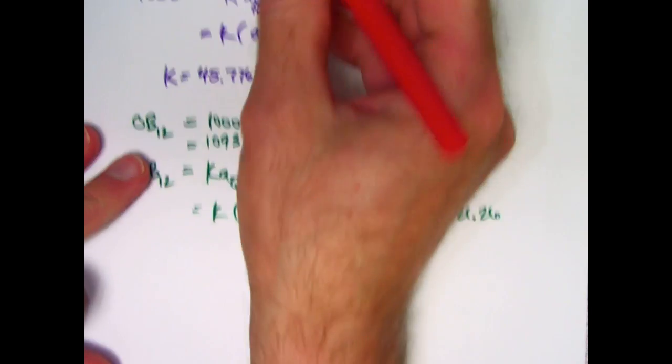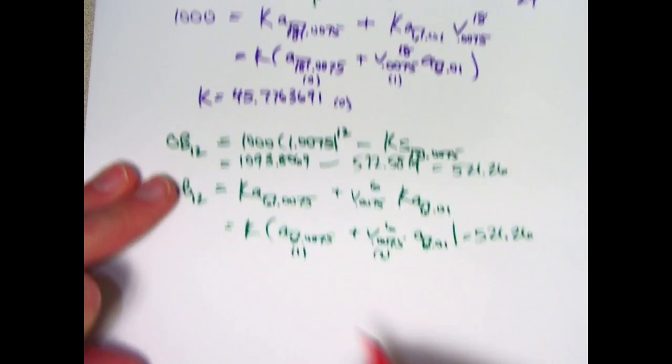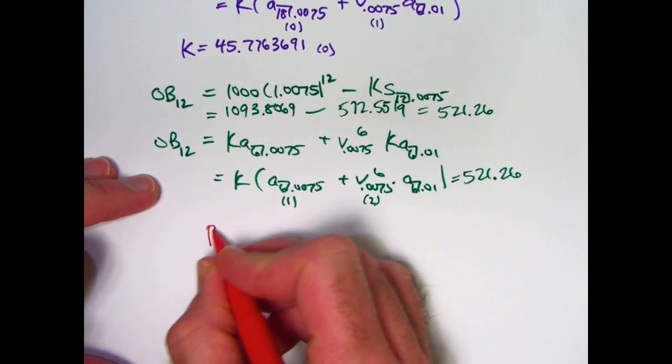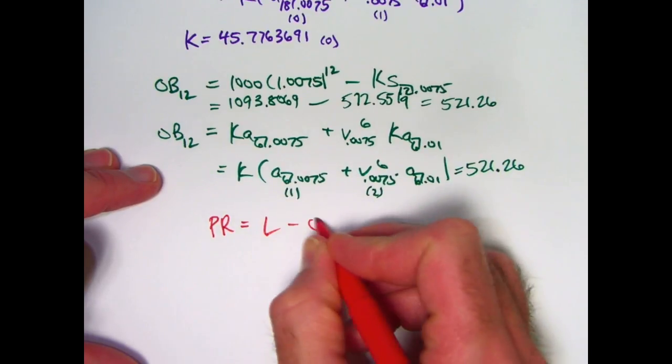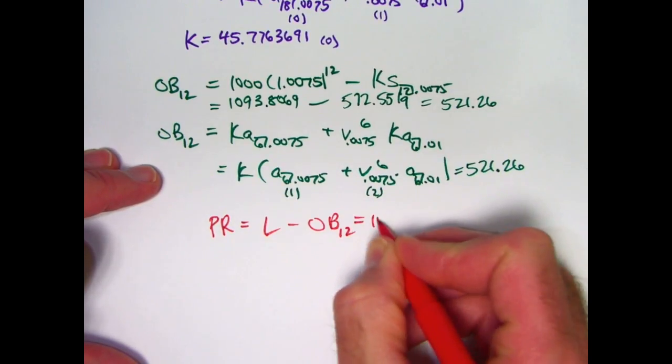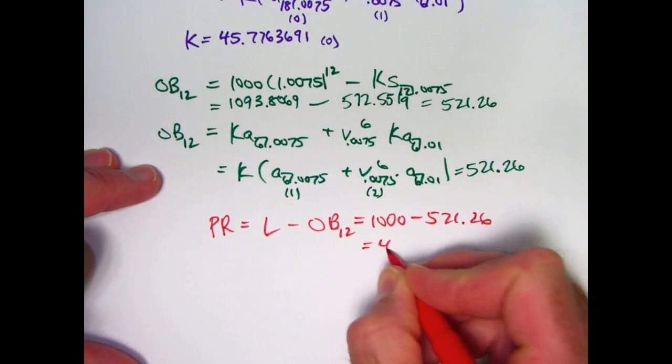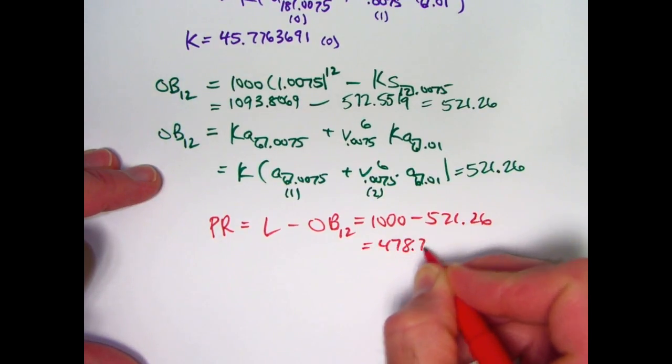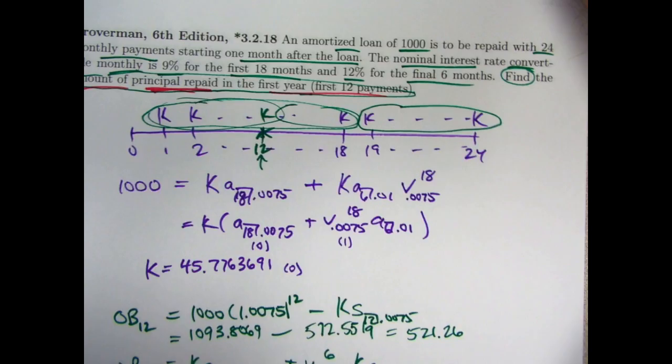So again, the final answer for the amount of principal repaid in the first year, the first 12 payments, is going to be the loan amount minus the outstanding balance at time 12: $1,000 minus $521.26. That will be $478.74. And that's the answer to the problem.